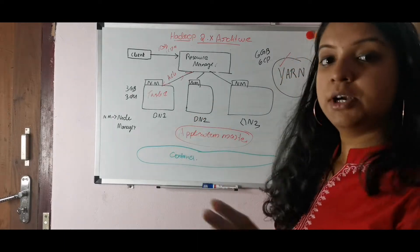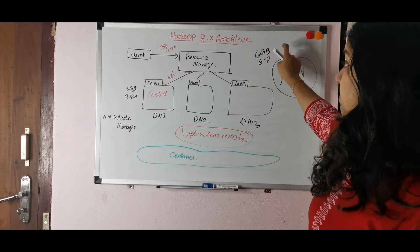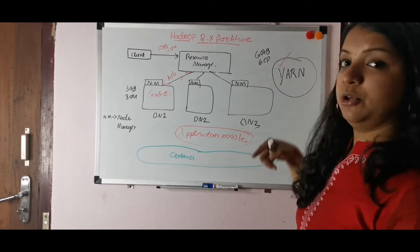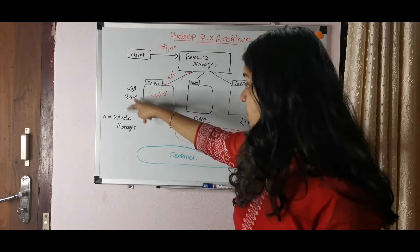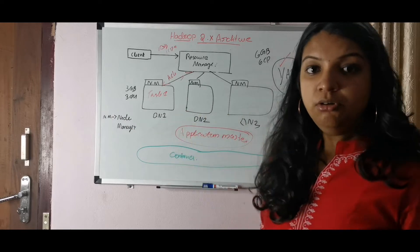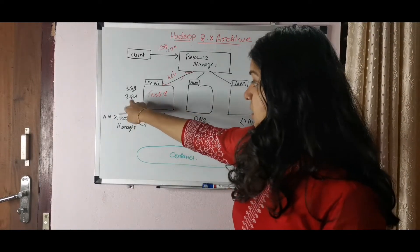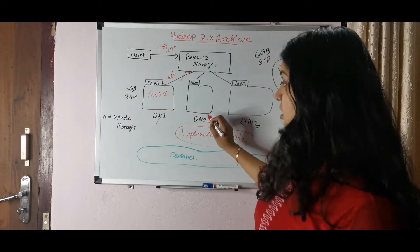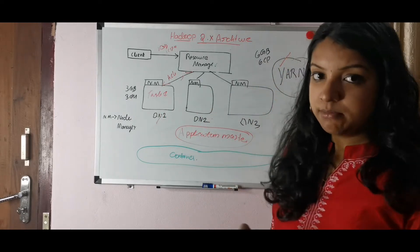For a larger requirement — say 6GB of RAM and 6 CPUs — if one Data Node only contains 3GB and 3 CPUs, the Resource Manager will take 3GB and 3 CPUs from one node and 3GB and 3 CPUs from another node to fulfill the request.